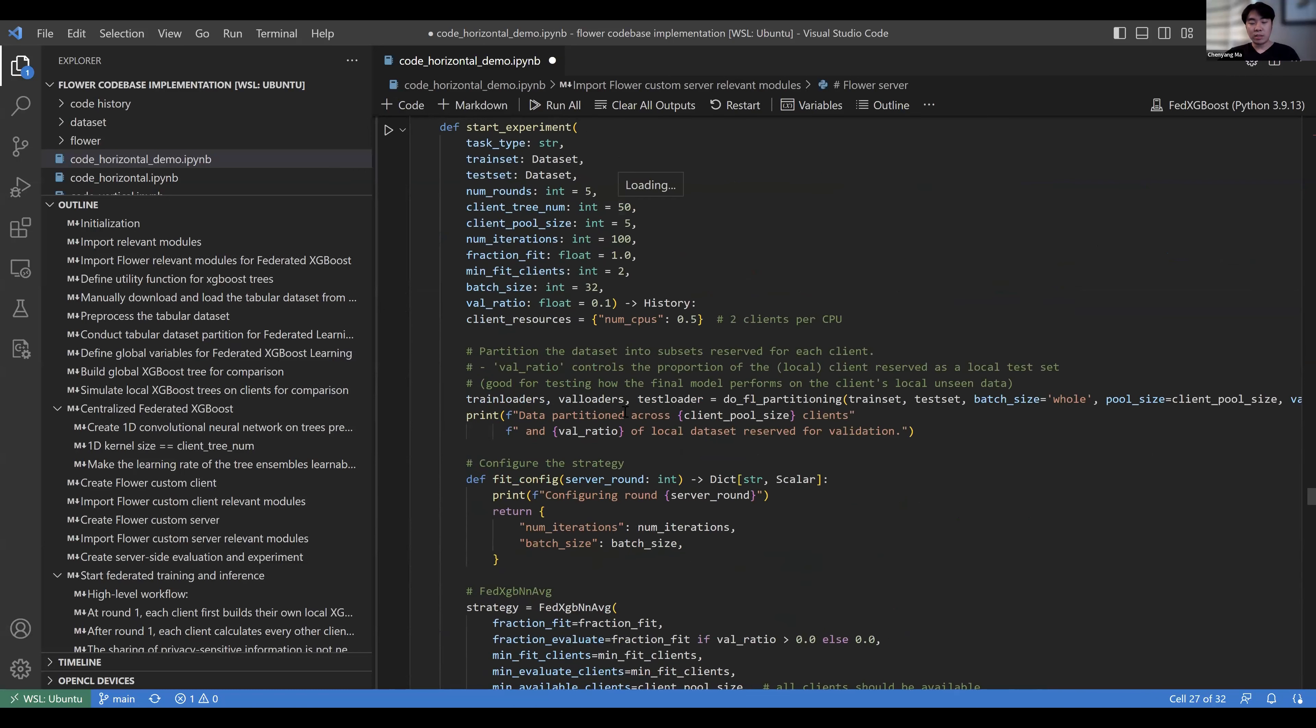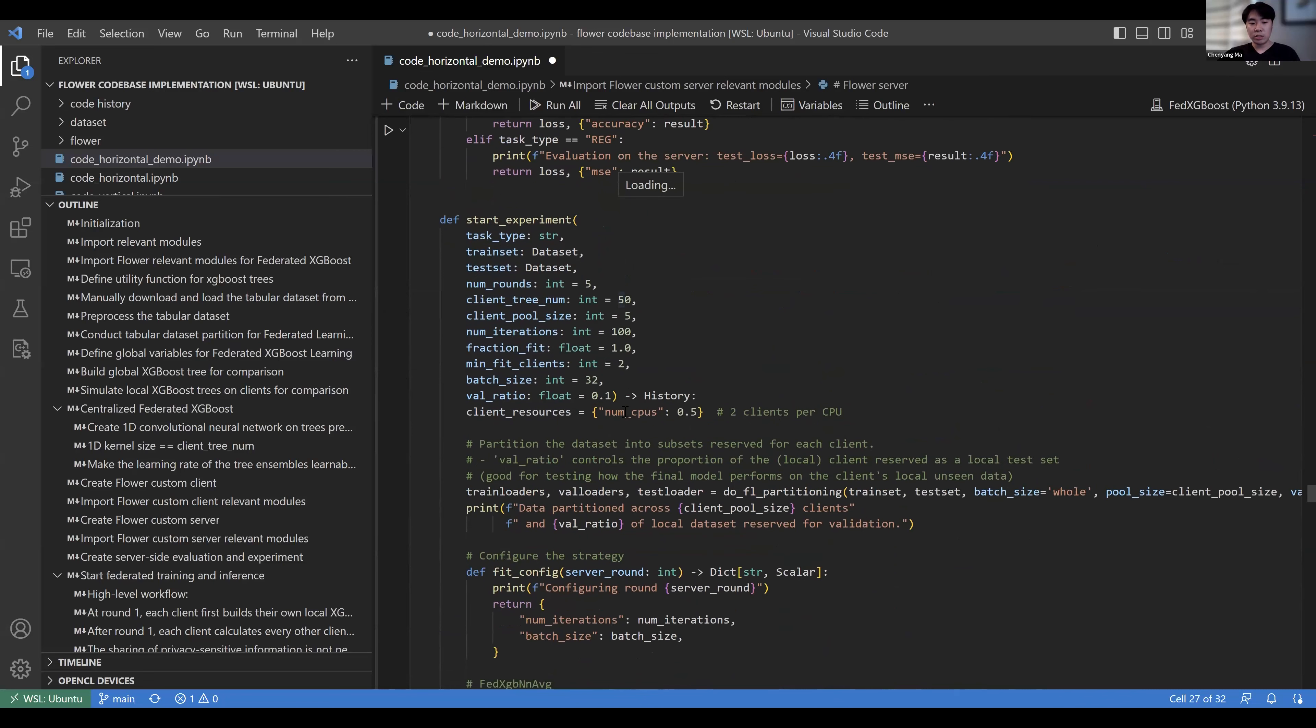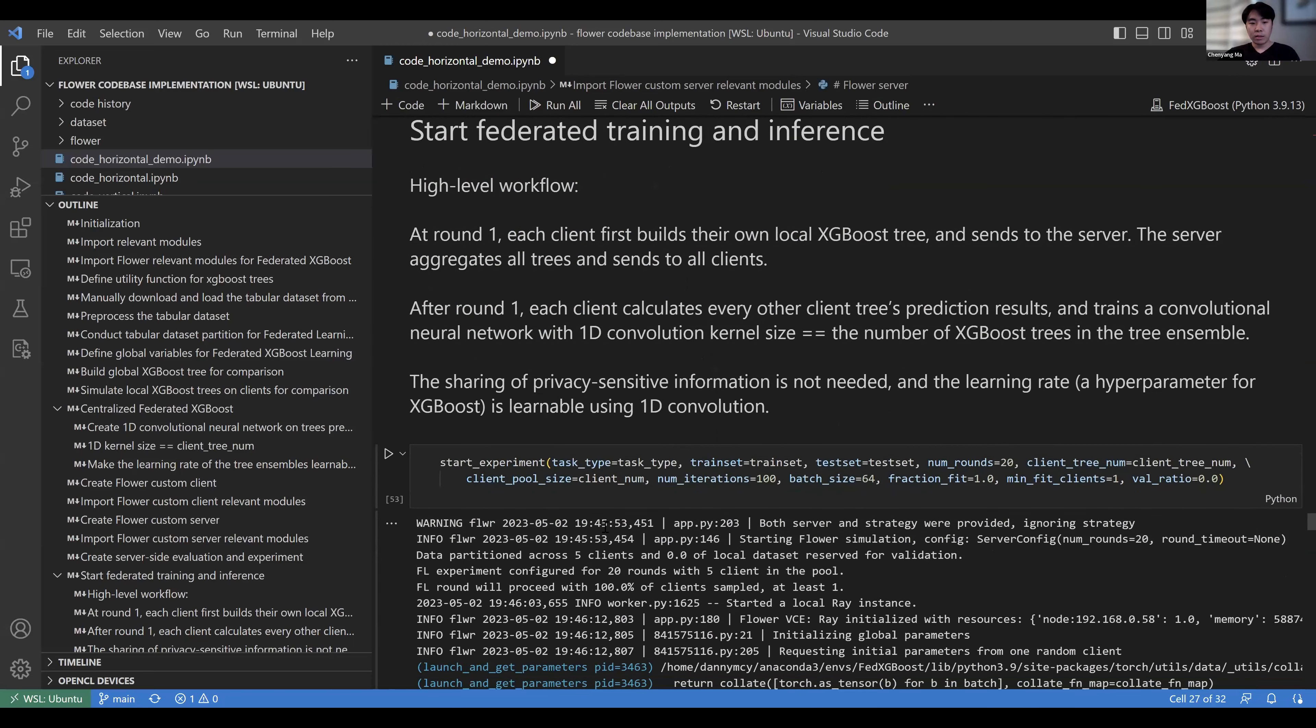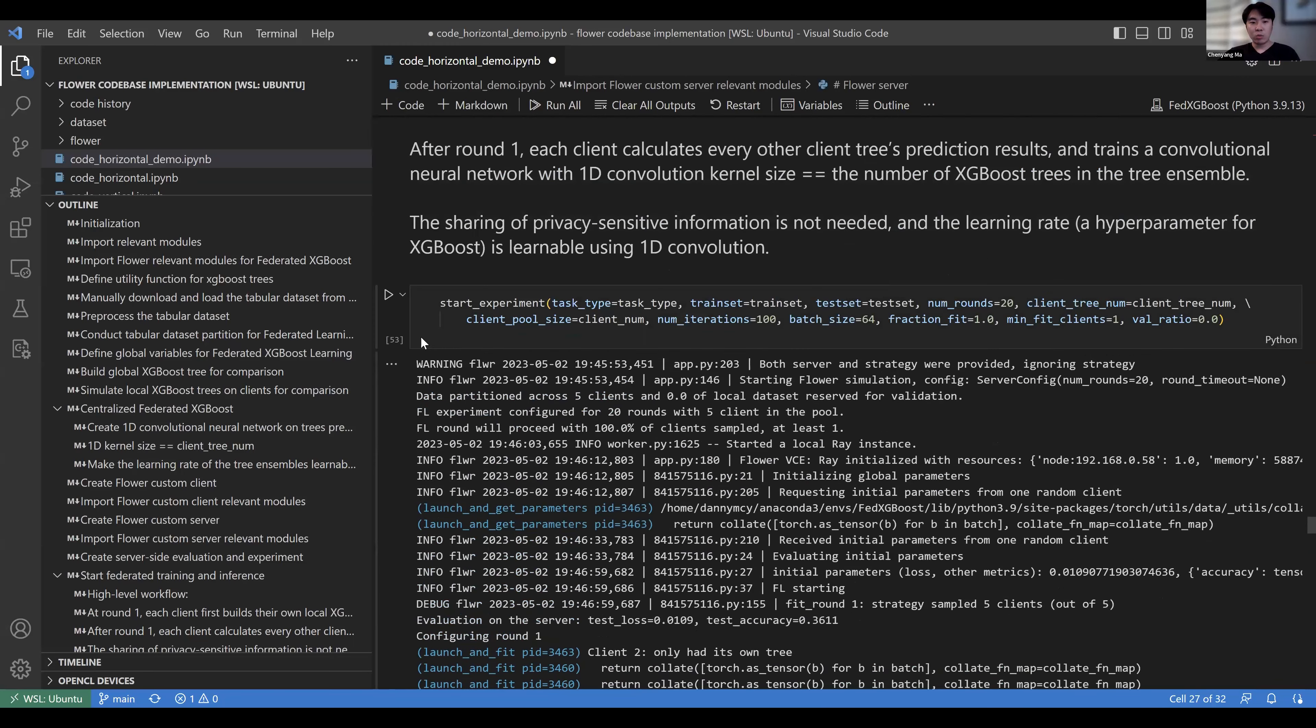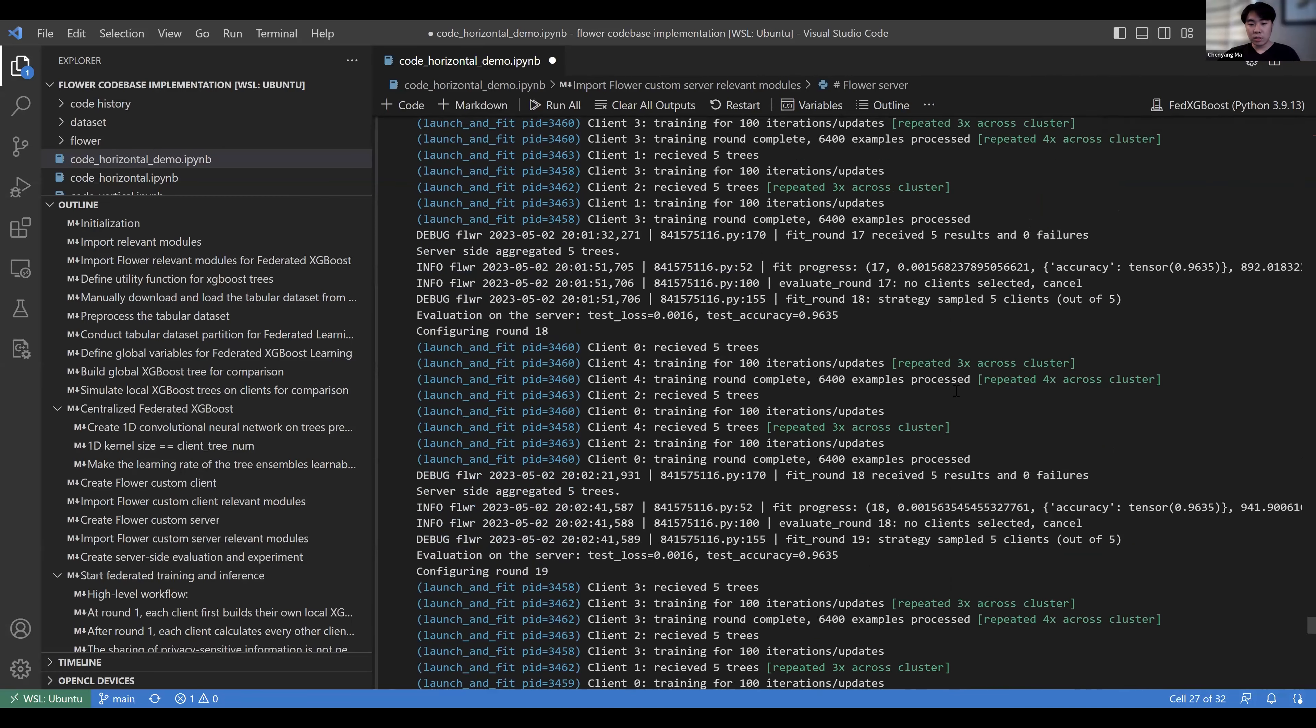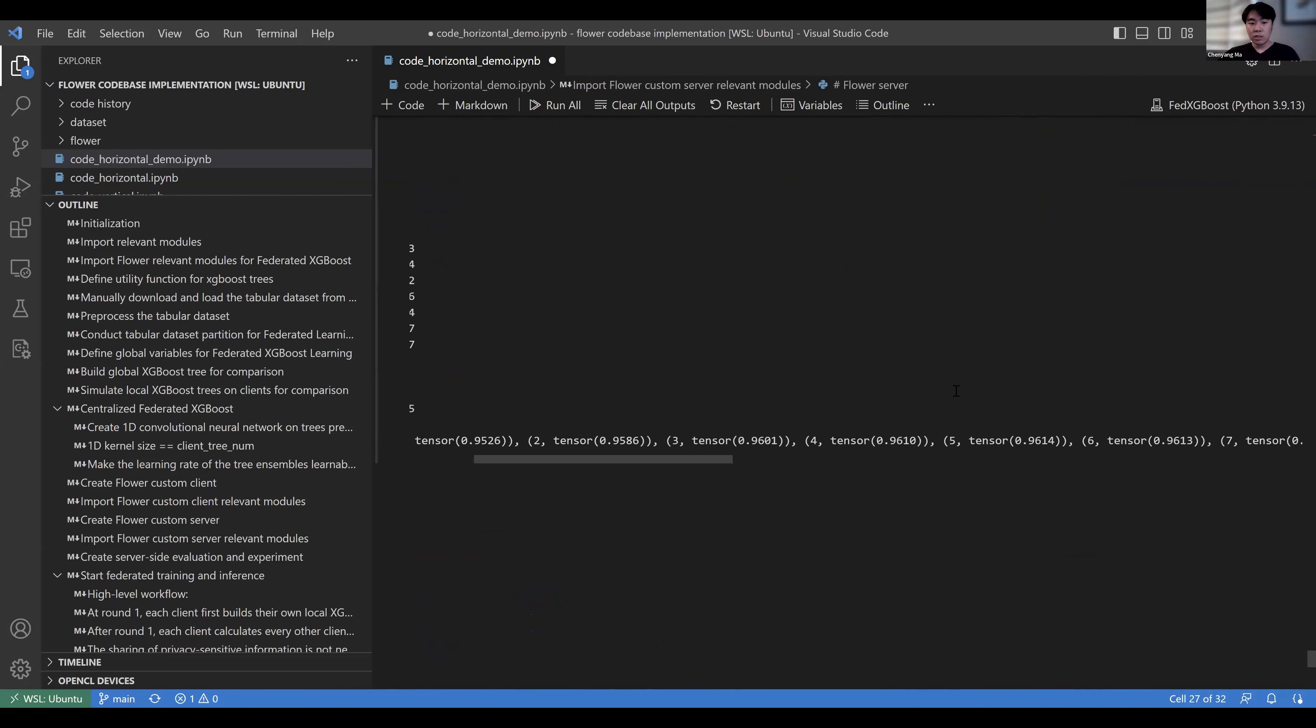Then we can define our start_experiment function to train our federated XGBoost. At the very end, we can click this block to run our code. I already ran the code to save time. We can see that after 20 rounds, the final accuracy achieved is 0.964, which is higher than the locally built XGBoost model and slightly lower than the globally built XGBoost.